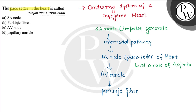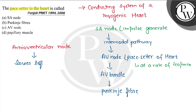So if I specifically talk about the pacemaker, we call the atrio-ventricular node the pacemaker. And what is its position? It is present at the lower left corner of the right atrium. So here we are being asked about the pacemaker, and the final answer will be AV node, that is option C. I hope you understood it well. All the best. Thank you.